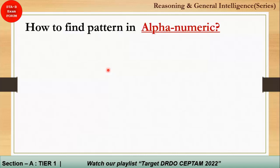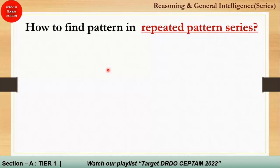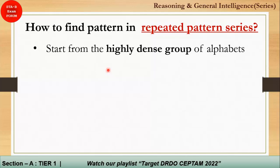For the alphanumeric series, it is a combination of both alphabet and numeric patterns, so all the rules discussed for number series and alphabet series also apply here. For finding a pattern in a repeated pattern series, go with the most densely packed group of alphabets or numbers — wherever there are more characters, start identifying the repeating unit from there.